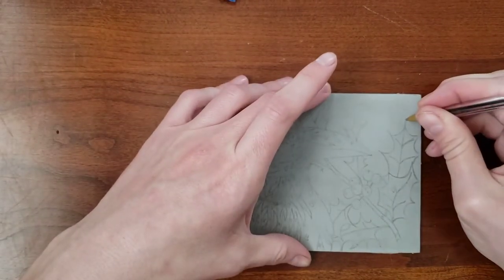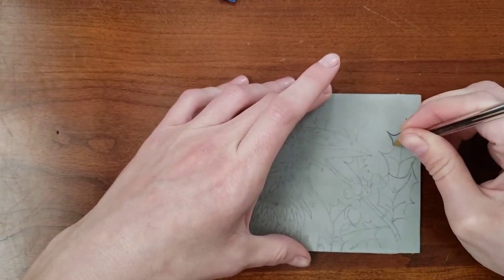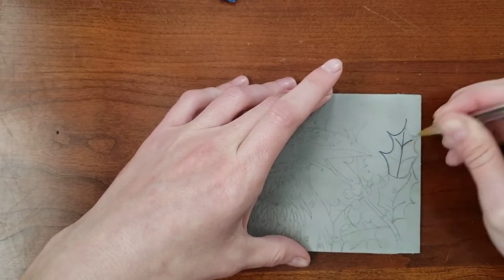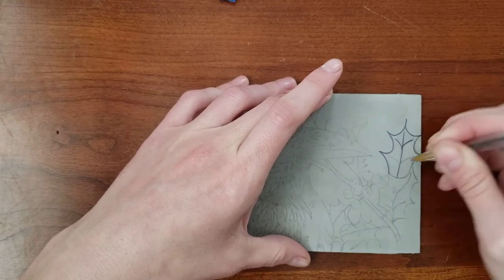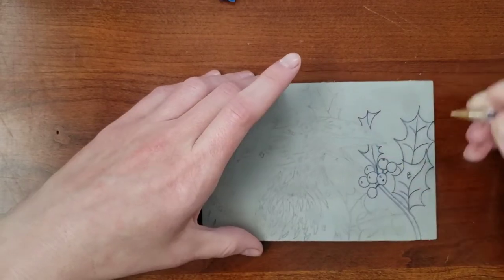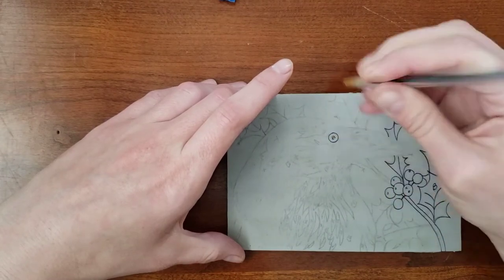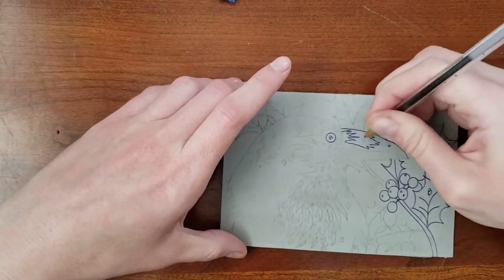Here I am tracing over the lines using a ballpoint pen. I began this drawing on the right side of my block so that my hand doesn't brush the graphite off as I draw.